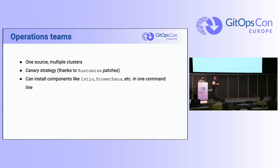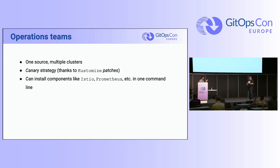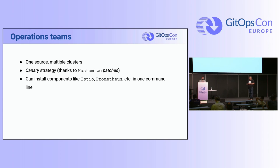Now we are able to deploy our applications. We have shown an example based on Kustomize, but Flux can also deploy Helm charts. What's great about Flux is you can have one source of truth — just one repo — with multiple clusters connected, and deploy third-party components like Istio, Prometheus, Vault, whatever you want, all pointing to that repo. You can also have a canary strategy to test a new version of Istio or Prometheus, or use blue-green deployments by pointing to a blue or green service folder and applying Kustomize patches.